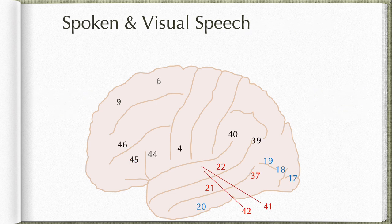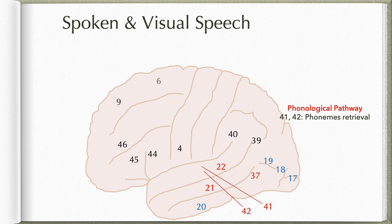Now let us talk about how spoken and visual speech is processed. Spoken speech is processed through what is known as the phonological pathway. First, area 41 and 42 — the primary auditory area and auditory association area — are involved in phoneme retrieval. They just register the sound made by the words spoken; they do not attach any meaning or sense to it, they just register the way the words are sounded.